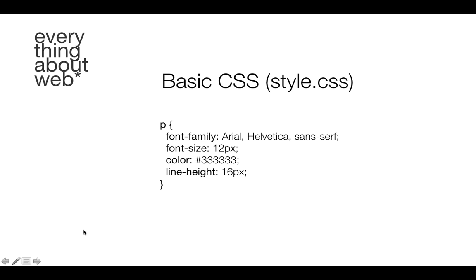So let's take a look at a basic CSS selector that might show up in a style.css file. Your code could look something like this where we've got a selector — which in this case is a P, which is our paragraph tag. So it's an element or tag selector that is followed by a left curly bracket and closed at the very end by a right curly bracket, and then in between the curly brackets are some properties.